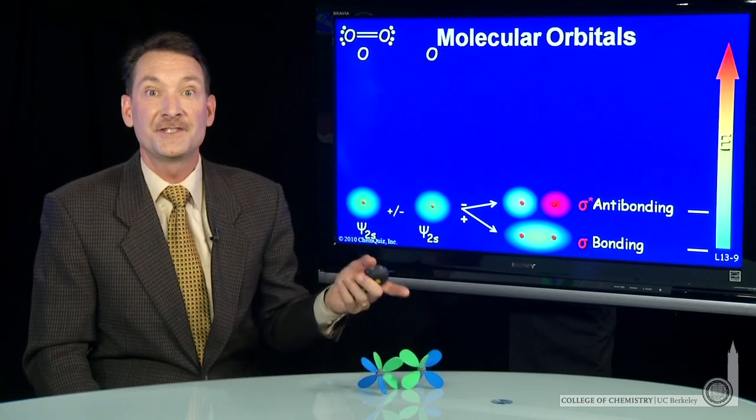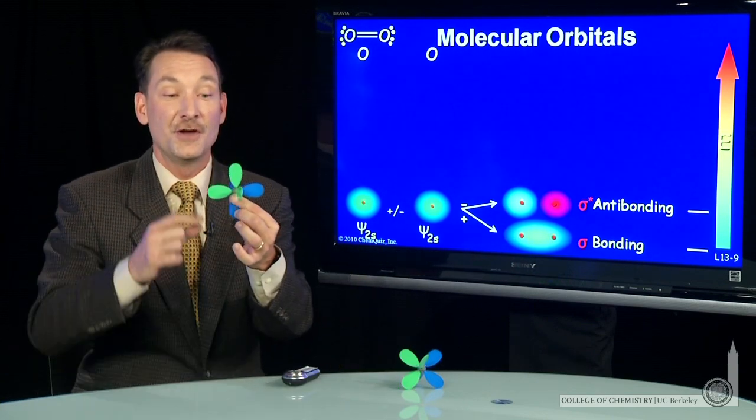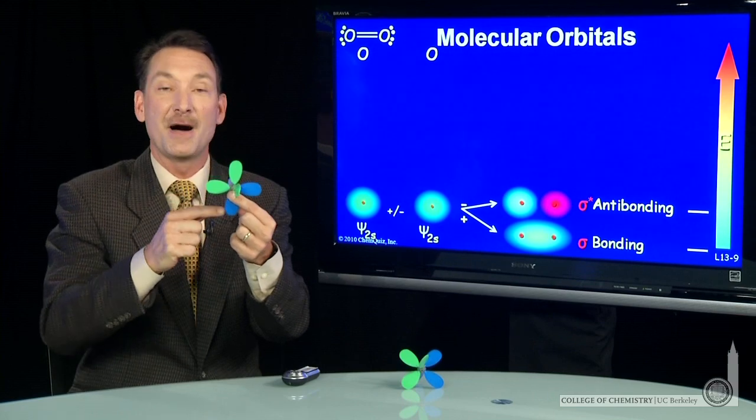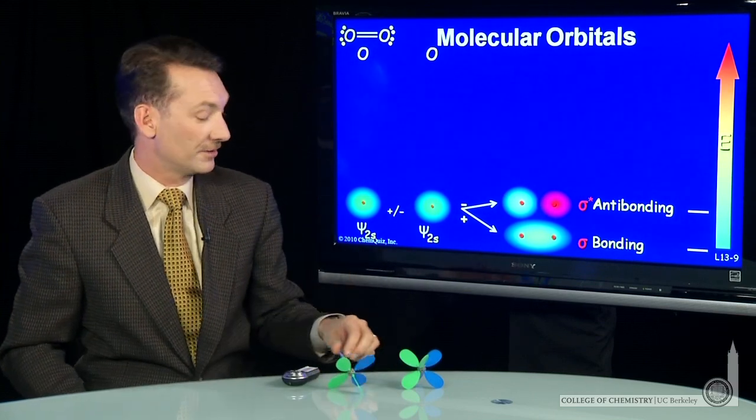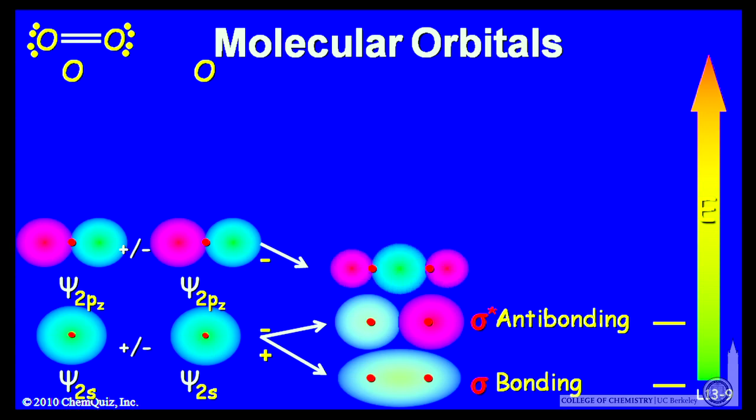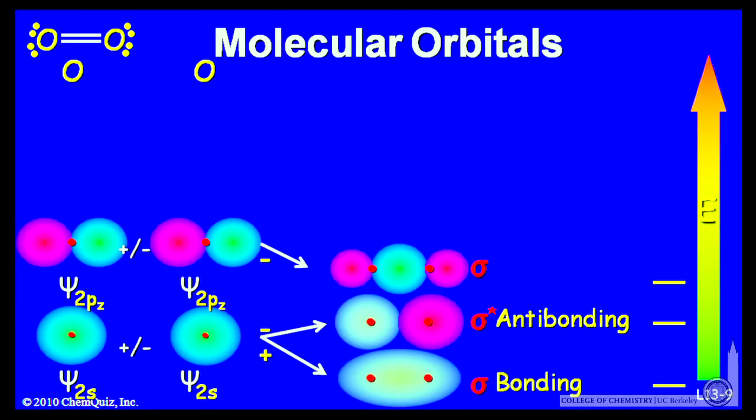So those are the s orbitals. Let's take the p orbitals. There are six p orbitals, three on each atom. So here's oxygen with a px, a py, and a pz orbital. The plus and minus designations indicated by the colors. So let's take the pz, the internuclear axis is z. So when I make the linear combinations of the pz, I can get a sigma bonding orbital. It's called sigma because the electron density is along the internuclear axis. And if I take the other linear combination, I can get a sigma anti-bonding orbital at higher energy with a node between the two nuclei.